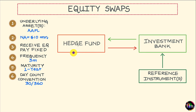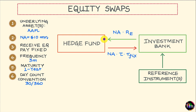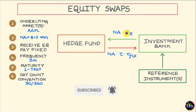In this equity swap, what has the hedge fund signed up for? Basically, we are talking about a one-year equity swap with four exchanges. Every exchange happens after a period of three months, and at the end of each three-month period, the hedge fund receives a cash flow calculated as the notional amount times the return offered by Apple over the settlement period just concluded. In return, the hedge fund pays out a cash flow equal to notional amount times the duration of the settlement period expressed in years times a fixed rate of interest.